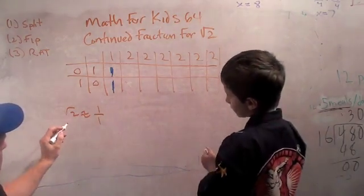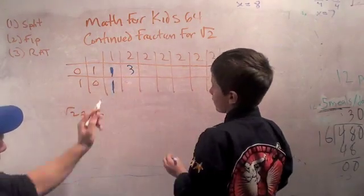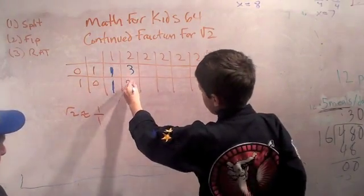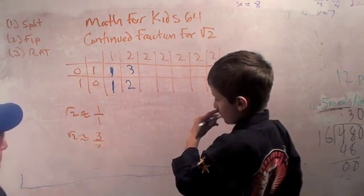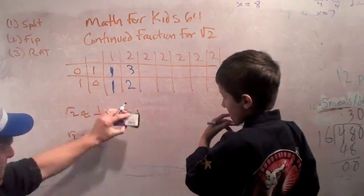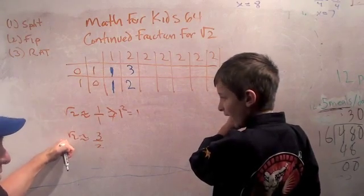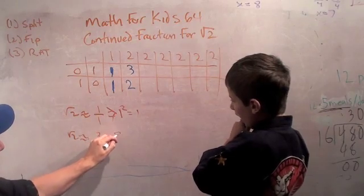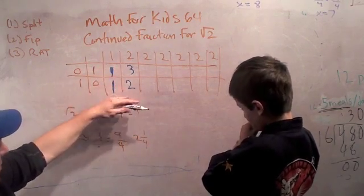Now let's do our second approximation. 2 times 1 is 2, plus 1 is 3. 2 times 1 is 2, plus 0 is 2. So now we get the square root of 2 is approximately 3 halves. This isn't a very good approximation — 1 squared equals 1, but we know the square root of 2 squared is 2. However, 3 halves squared is 9 fourths, which is 2 and 1 fourth. That's a decent approximation.